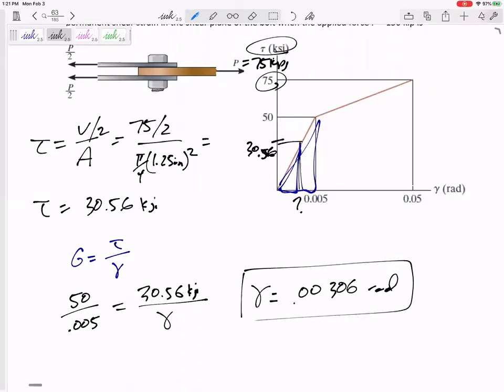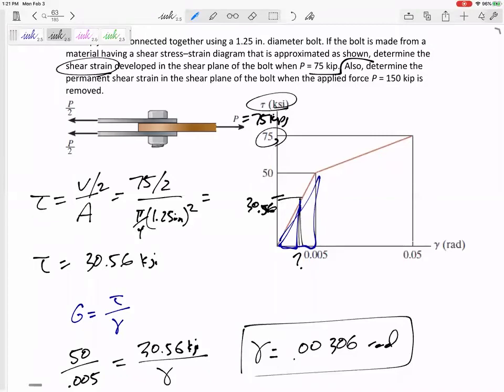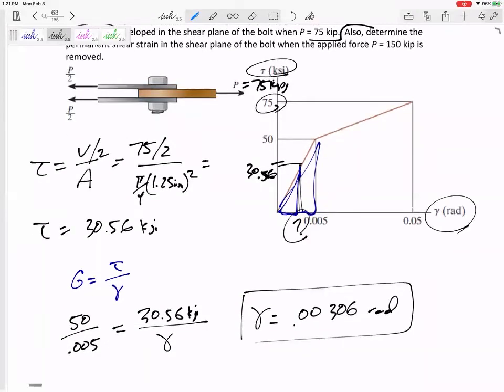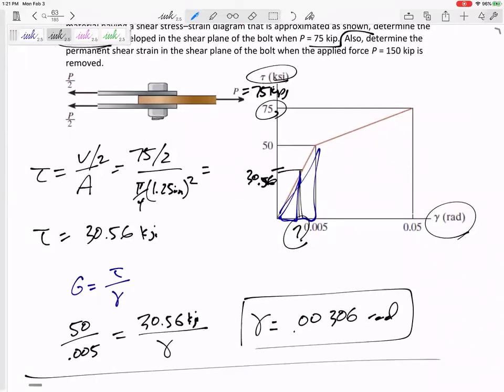Make sure that makes sense. I can't tell you how many times students will just throw some numbers that obviously would not make sense from that stress-strain diagram, but that makes sense. It's linear from 0 to 50, so if it was at 25 it'd be halfway there. This is past 25, so a little over halfway. That right there is the shear strain. Now second part - what if the applied force was 150? Determine the permanent strain if we apply 150 and then remove it.